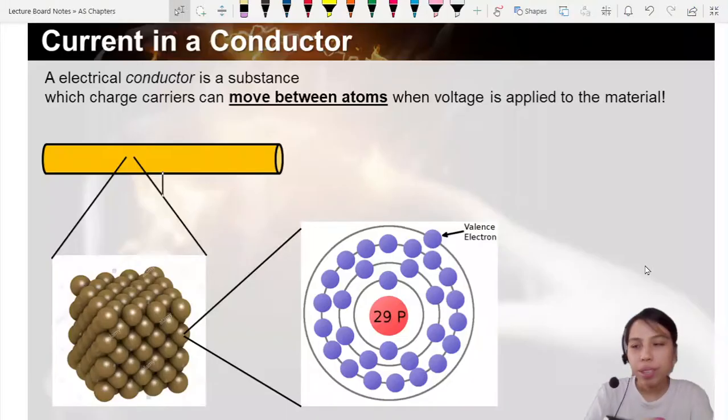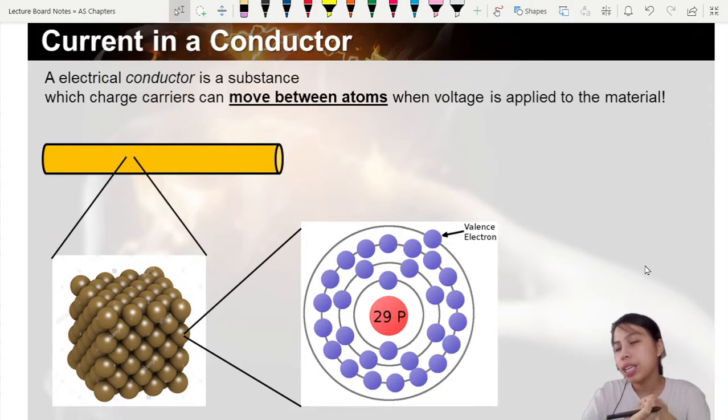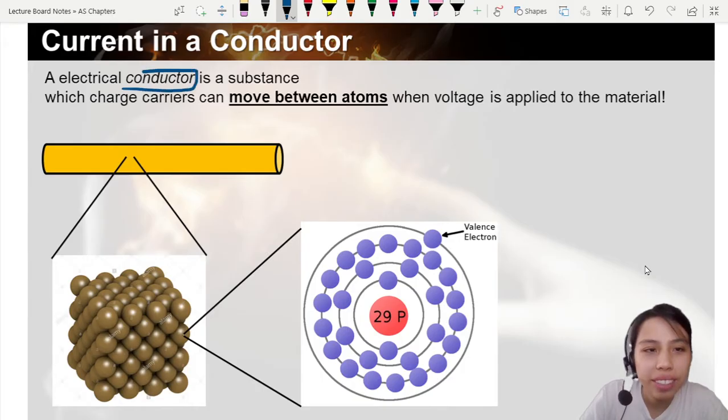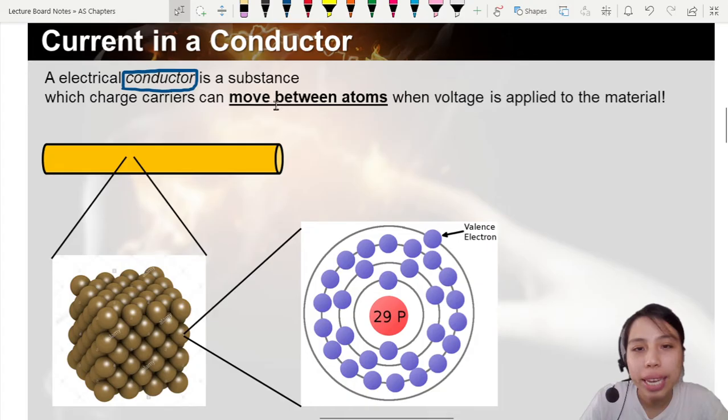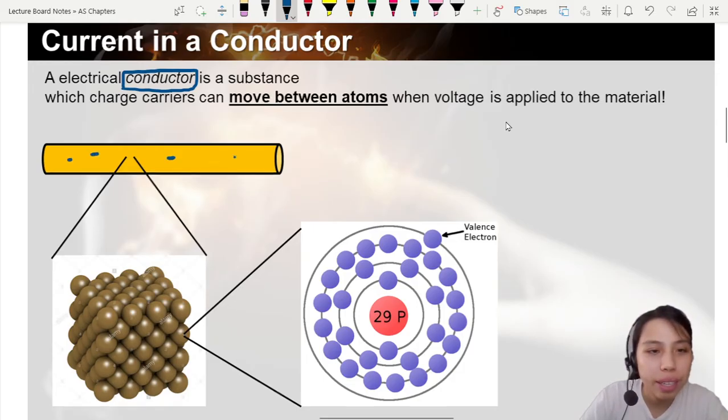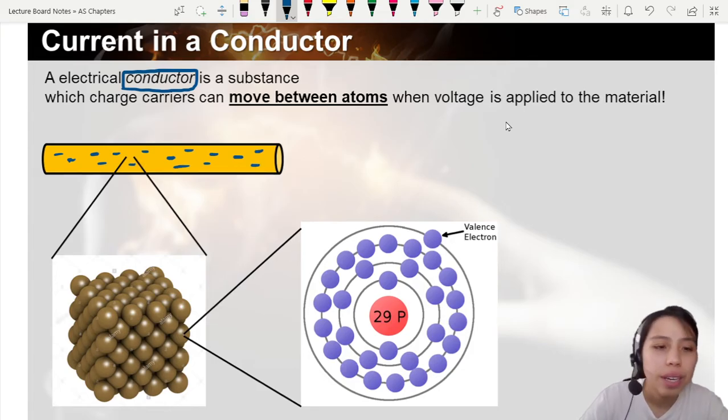It turns out that currents can only flow under normal circumstances in materials called conductors. So, electrical conductor is a substance where charge carriers can move between atoms when you apply a voltage to the material. Remember, all the negative charge is inside. Where do the negatives come from? Why some material can, some cannot? Well, because, for example, this is copper.